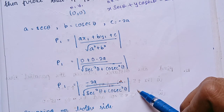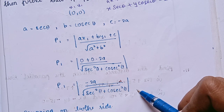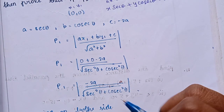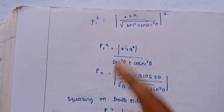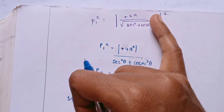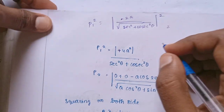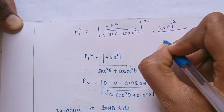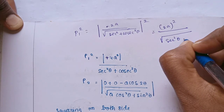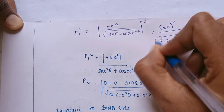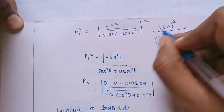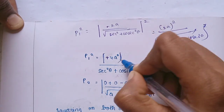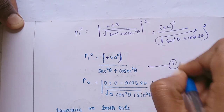We will compute P1 square and P2 square, then add them. We square both sides — already modulus is there, so minus becomes plus. For P1, this gives 2A the whole square divided by root of (sec²θ + cosec²θ), which simplifies to 4A² divided by (sec²θ + cosec²θ). The square and square root cancel.